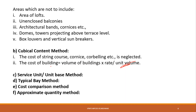In the Cubic Content method, the cost of string courses, cornices, and corbelling is neglected. The cost of the building is calculated as: Cost = Volume of building × Rate per unit volume.